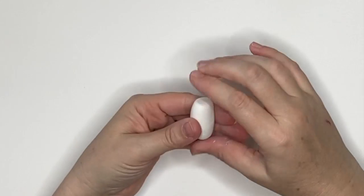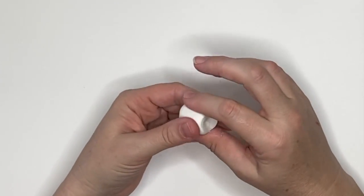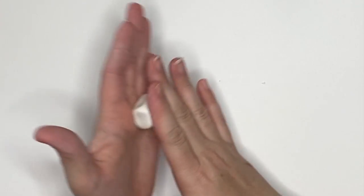I'm just going to condition it a little bit to make it pliable enough to form it into a marshmallow. That's what it looks like to me, it looks like a marshmallow.